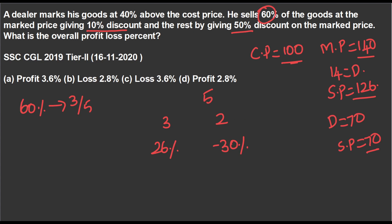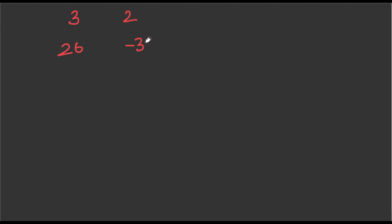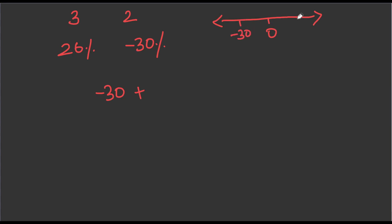Now I know the first number line. I'm going to use the deviation method. We have 3 and 2 goods, with 26% profit and minus 30% loss. On the number line, central point is 0, minus 30 on one side and plus 26 on the other. The gap difference: 30 plus 26 equals 56%. So the net deviation is plus 56 percentage.